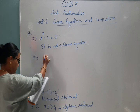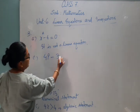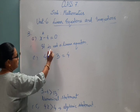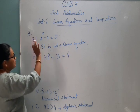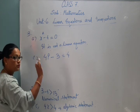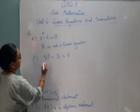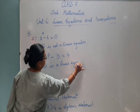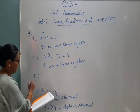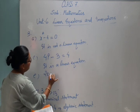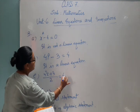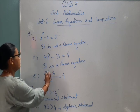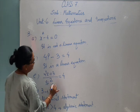Number 3C: four P minus three is equal to four. The degree of variable P is one, so this is a linear equation. Number 3E: two X plus three divided by two is equal to four. The variable X has a degree of one, so it is also a linear equation.